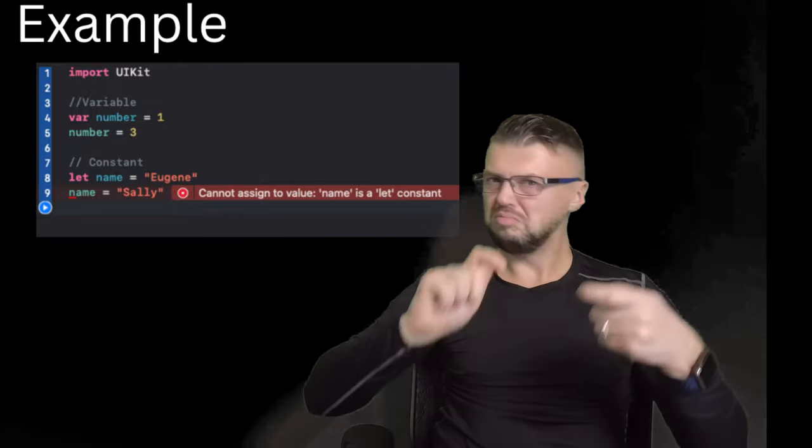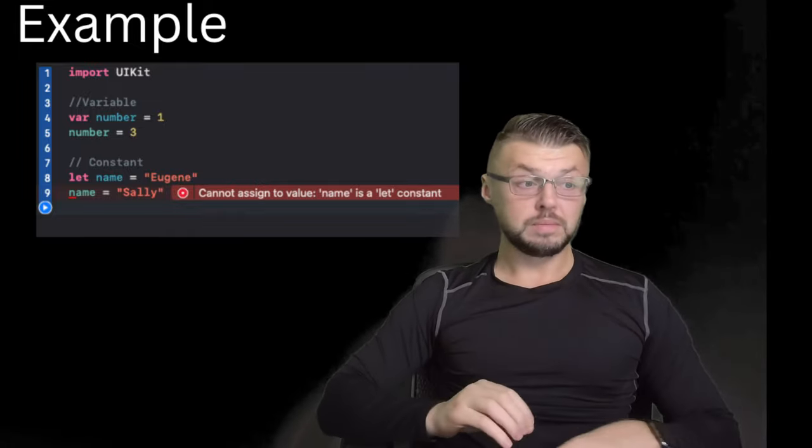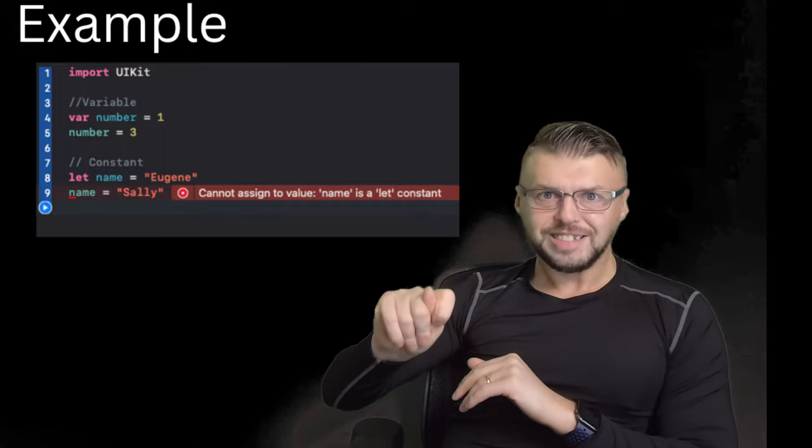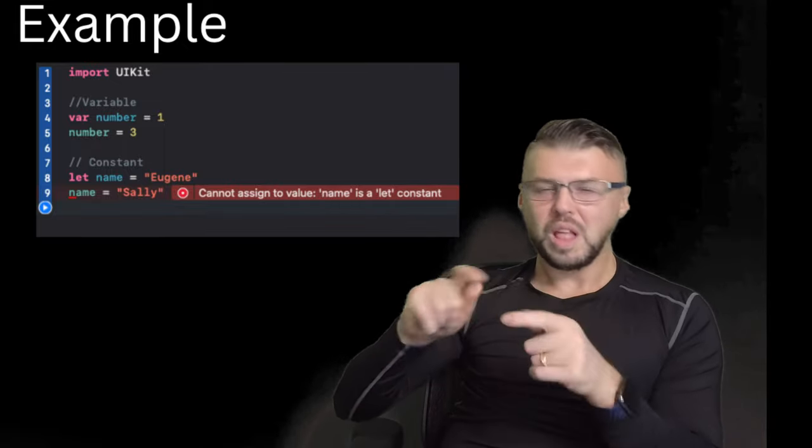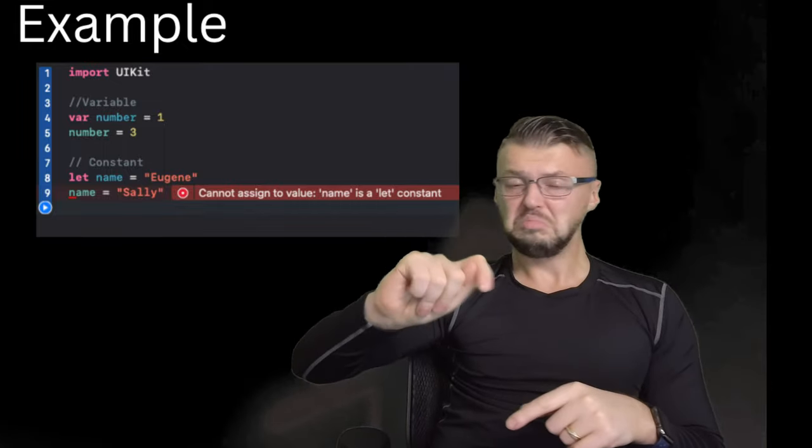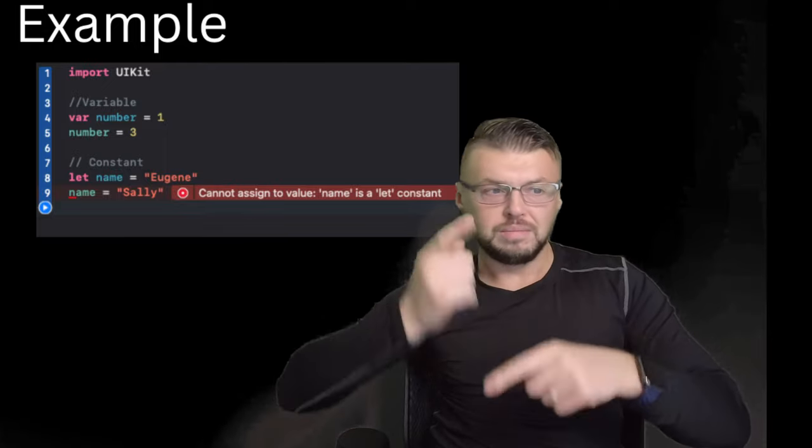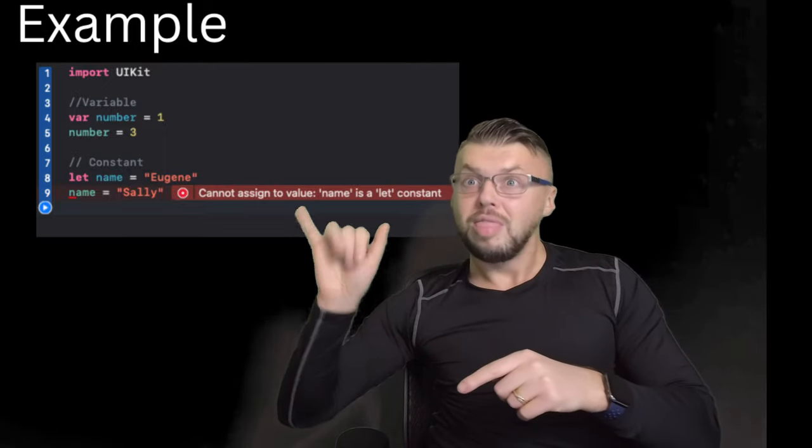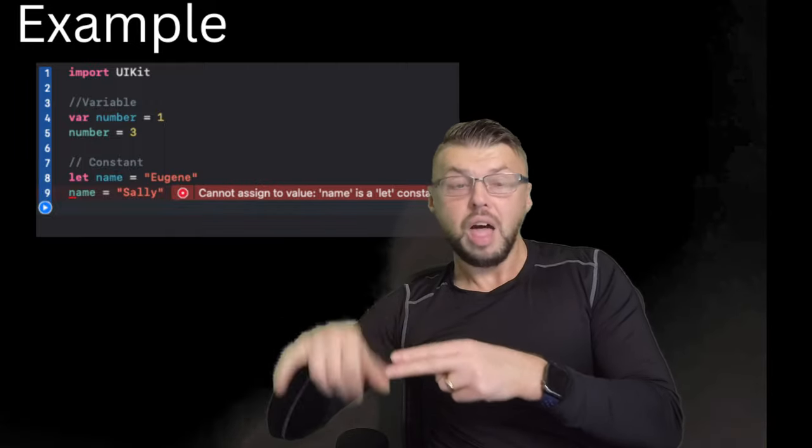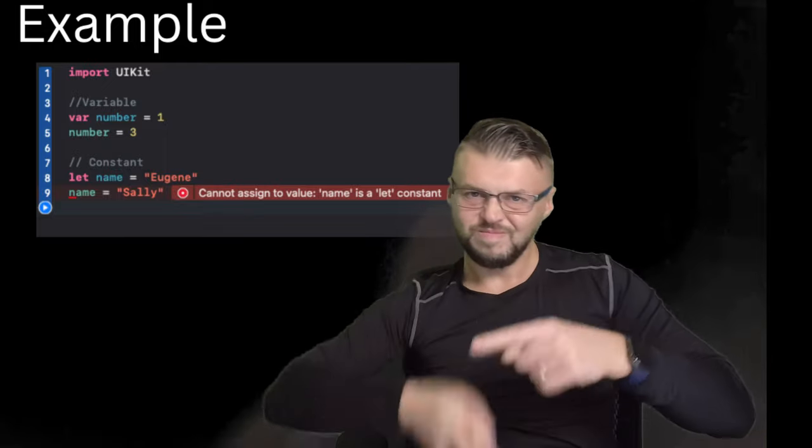We can change it over and over again without any problems. We also have a constant name using let. When we're trying to change name from Eugene to Sally, Swift gives us a warning because name is let, meaning it's a constant and cannot be changed.